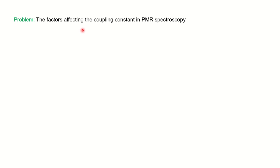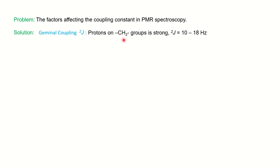The question is: what are the factors affecting the coupling constant in PMR — proton magnetic resonance spectroscopy, also written as 1H NMR? There are various types of coupling. First, germinal coupling is a two-bond coupling — 2J. It is for CH2 groups and is very strong. For alkenes, the coupling constant value for germinal protons varies from 10 to 18 Hz. If you see the two protons on the same carbon, that is two-bond coupling — germinal coupling.